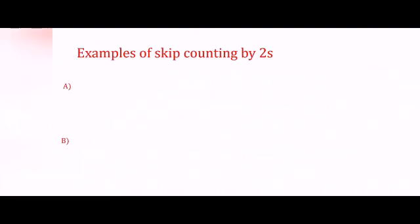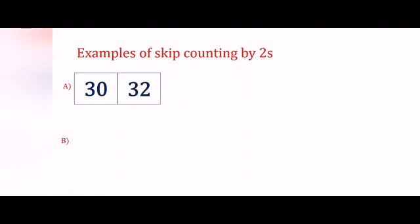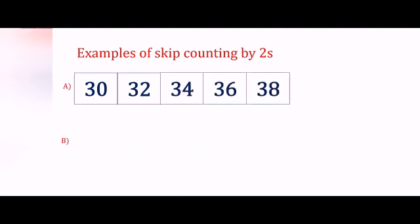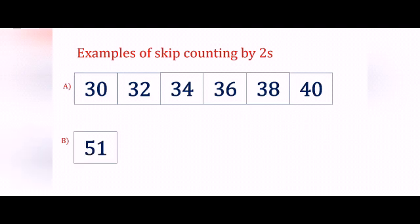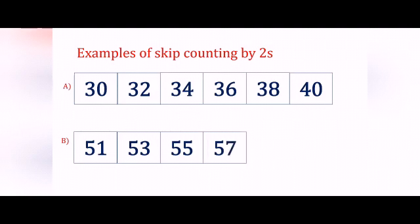Here are some examples of skip counting by 2s. You add 2 to get the next number. So if I take 30, I add 2 each time: 30, 32, 34, 36, 38, and 40. Let's see another example starting at 51: 51, 53, 55, 57, 59 and 61.